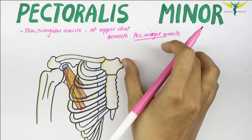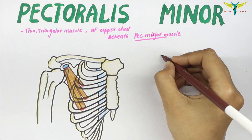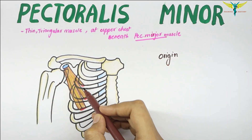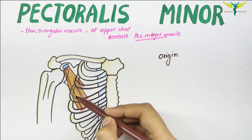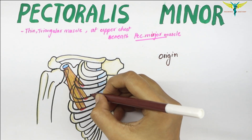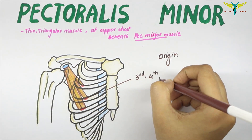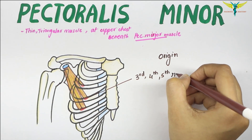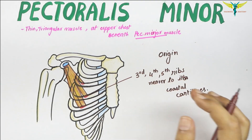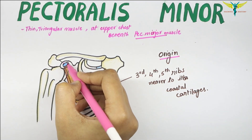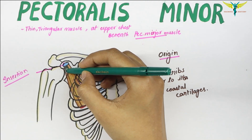We will talk about the pectoralis major muscle in the upcoming video. The pectoralis minor originates from the third, fourth, and fifth ribs near to the costal cartilages.